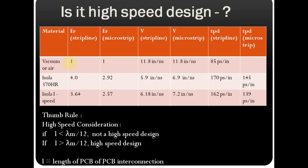Looking at the parameter table, you can see: material number, dielectric constant for strip line and micro strip line, velocity for strip line, velocity for micro strip line, propagation delay for strip line, and propagation delay for micro strip line. For vacuum the dielectric constant is 1. For the commonly used PCB material FR4 370HR, the relevant values are listed in this table.